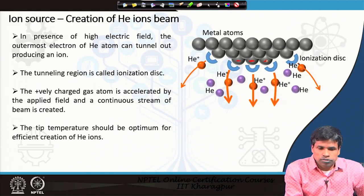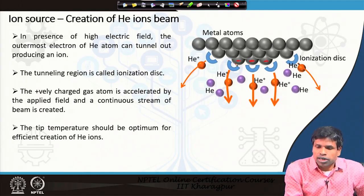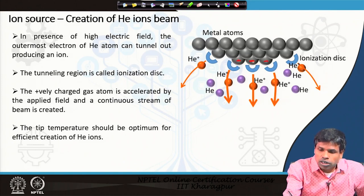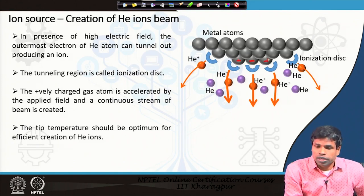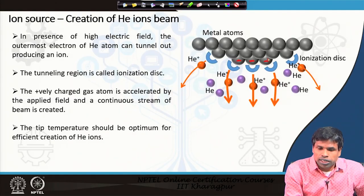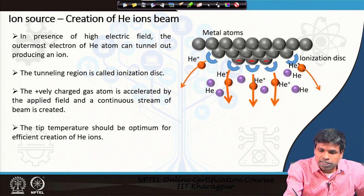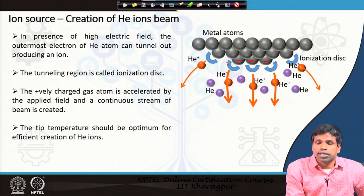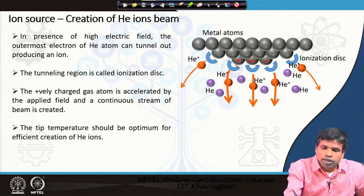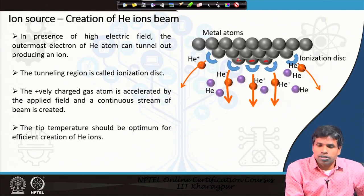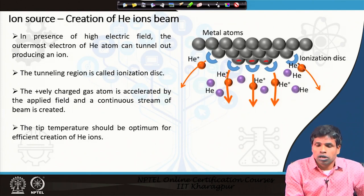When gas comes in contact with those atoms, there is maximum field at those atoms. The gaseous atoms, when they come in contact with those atoms, are ionized. They form a disk of field — a critical surface called the ionization disk — and when a helium atom comes in contact with that field disk, it loses an electron, which tunnels into the metal tip, producing a helium ion.